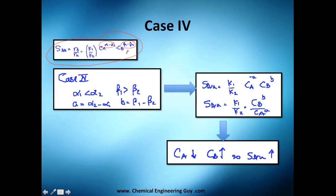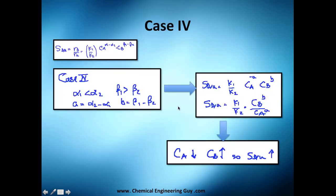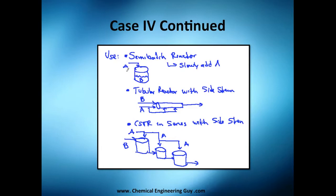Case 4 is when α1−α2 is negative but β1−β2 is positive, meaning we want low concentration of A and high concentration of B. The reactor configurations are the same as Case 2 but reversed. For the semi-batch: load B at high concentration and feed A slowly. For the PFR with side streams: B flows as the main stream and small quantities of A are injected at side points along the reactor.